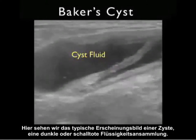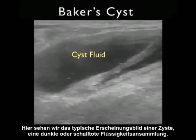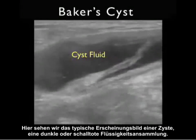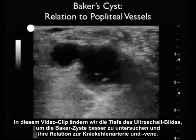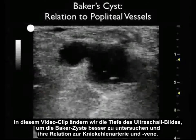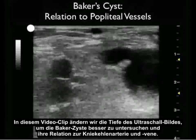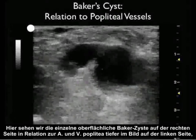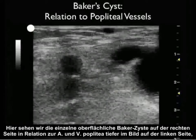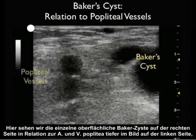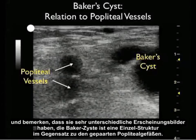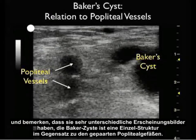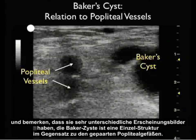Here we see the typical appearance of a cyst — that is, a dark or anechoic fluid collection on bedside sonography. In this video clip, we're going to change the depth of the ultrasound image to better interrogate the Baker's cyst in its relation to the popliteal artery and vein. Here we see the single superficial Baker's cyst to the right in its relation to the popliteal artery and vein seen deeper on the image and to the left. Note that they have very different appearances — the Baker's cyst is a single structure in contrast to the paired popliteal vessels.